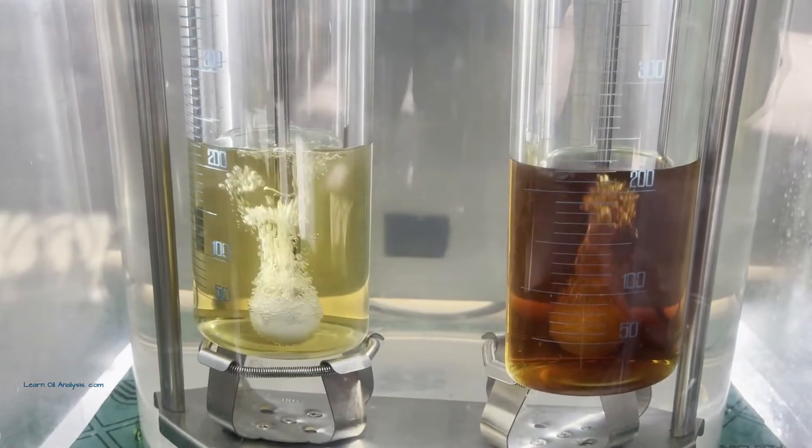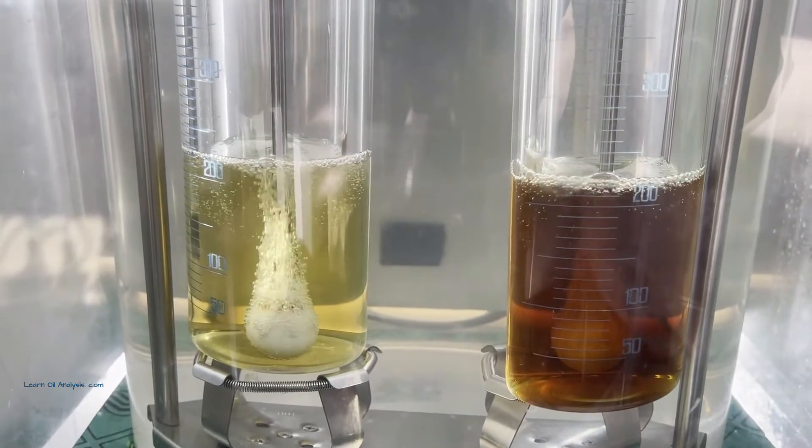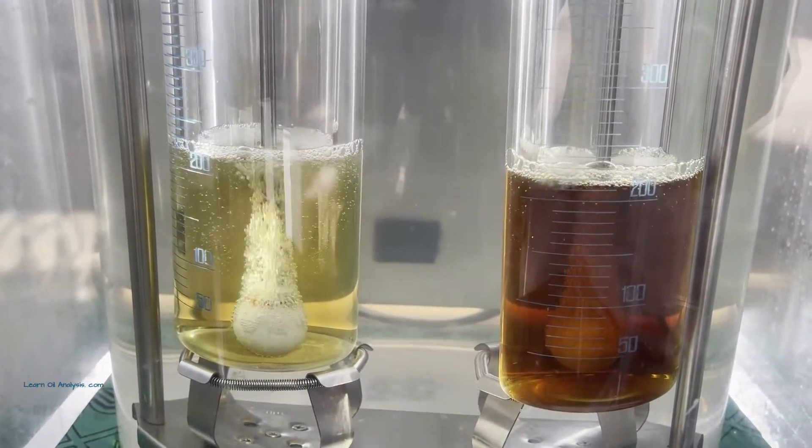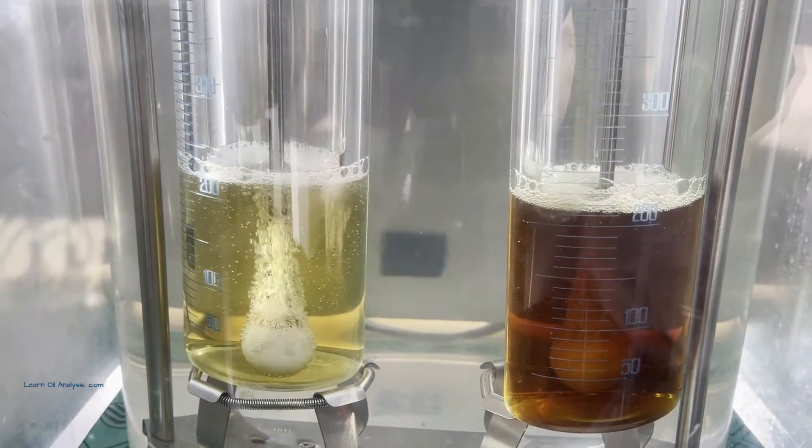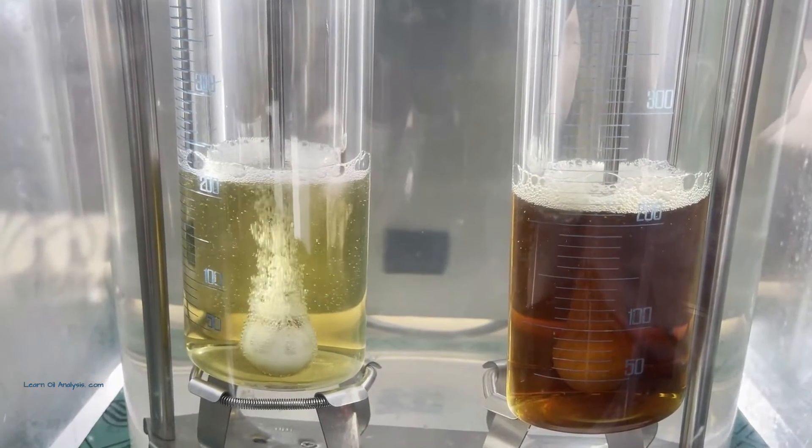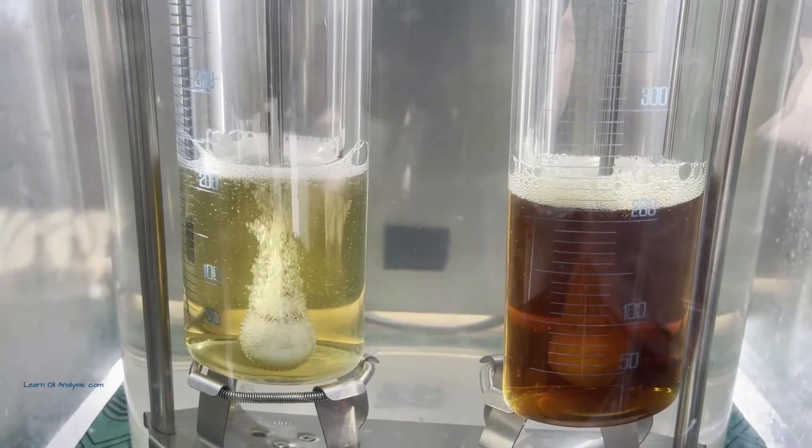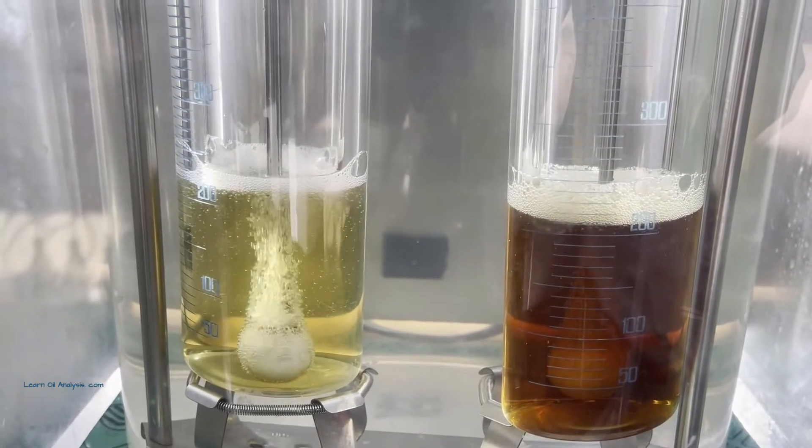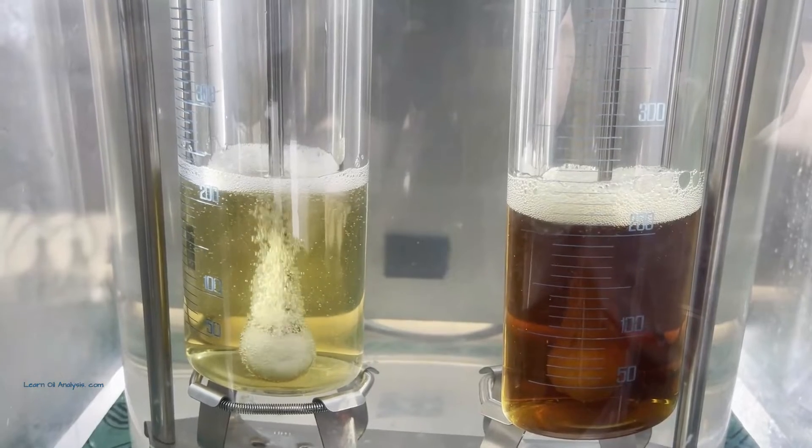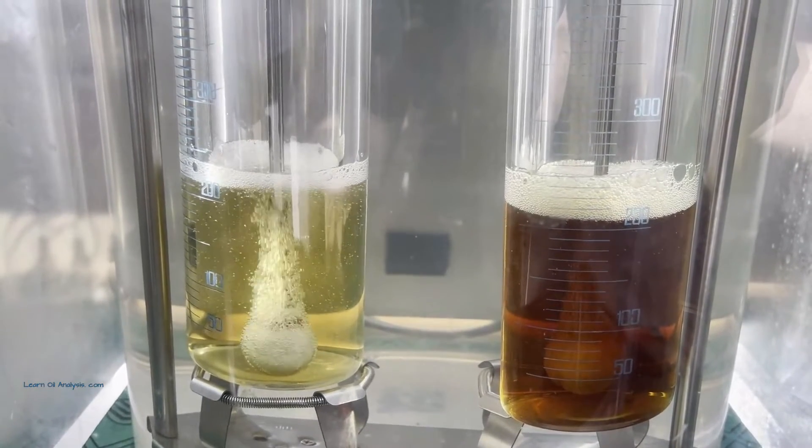Picture this, air is pumped through an oil sample using a special air stone, not too dissimilar to the ones in your aquarium. We then measure the foaming tendency and stability. The tendency is the amount the oil will foam when given a chance under heavy air entrainment conditions. Stability is how much foam stays at the end after removing the air source.